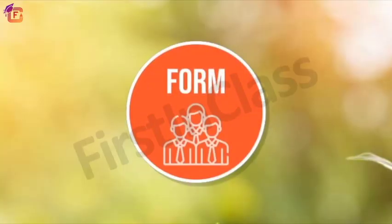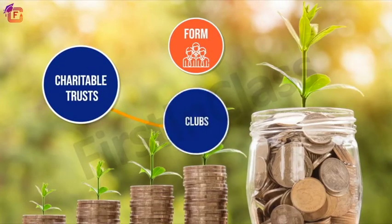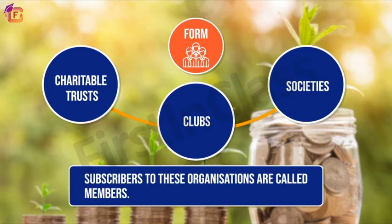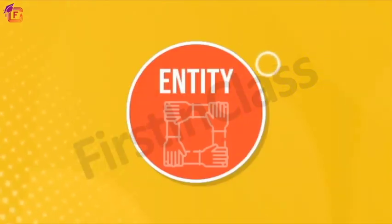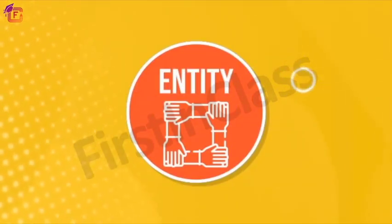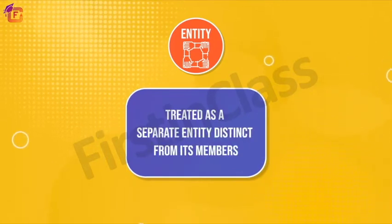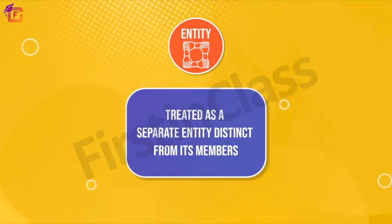The second feature is form: NPOs are set up as charitable trusts, clubs, or societies, and subscribers to these organizations are called members. The third feature is entity: not-for-profit organizations are treated as a separate entity, distinct from their members. They are not affected by the admission of new members or the death of an existing member.